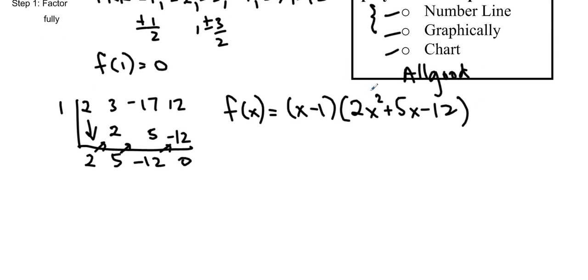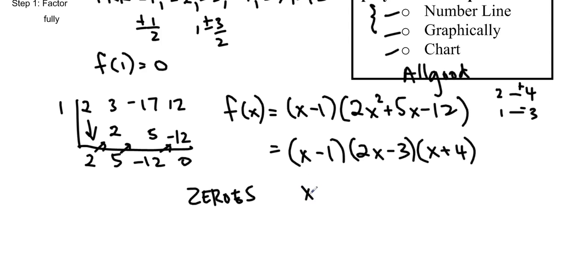Then we can factor this quadratic using the quadratic formula, or you could use your brain. If you've never seen me do this method and you want to know how I do it, you can ask me. I get 2x-3 times x+4. You can double check if you get the right answer. These are our answers, so we're going to find our zeros: x equals 1, x equals 3/2, and x equals -4. So basically, I just solved this polynomial.